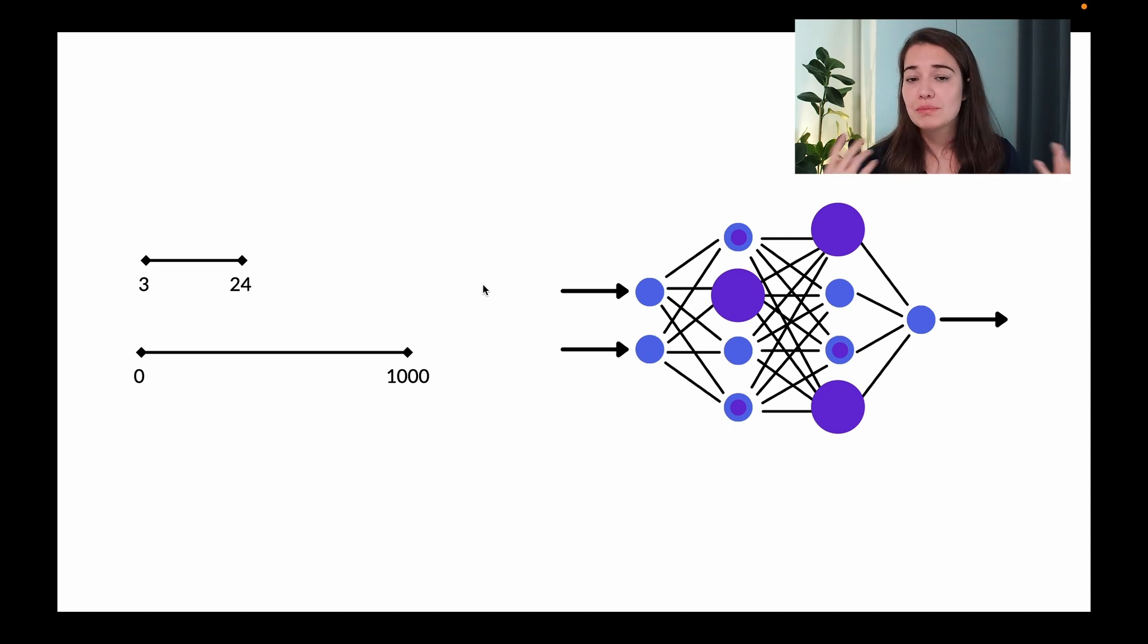So what we do to overcome this problem normally is that first of all, we normalize our inputs and we also try to use the correct weight initialization technique and also the correct activation function that goes with this weight initialization technique. But even if you do everything correctly, unstable gradients problem might come back later in the training. But there is one solution that could save the day and that's batch normalization.